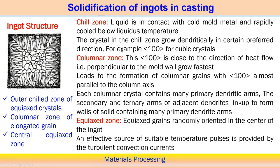After the columnar zone, at the middle we get the equiaxed zone. The typical structure is: chill zone, columnar zone, and equiaxed zone — which usually occurs during solidification of a cast component. The columnar zone is close to the direction of heat flow, perpendicular to the mold wall, and grows faster because along this direction the steepest temperature gradient exists. Each columnar crystal may have primary and secondary dendritic arms. Finally, at the center we get equiaxed grains, where nucleation occurs almost simultaneously and heat is extracted uniformly throughout the zone.